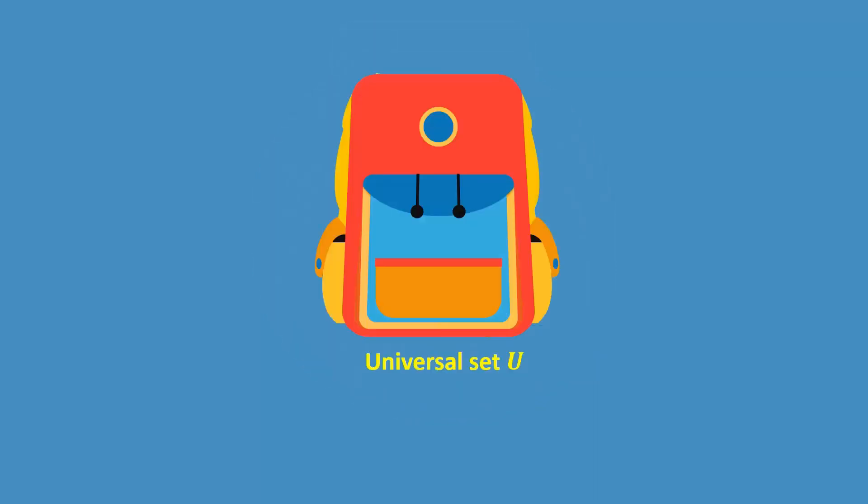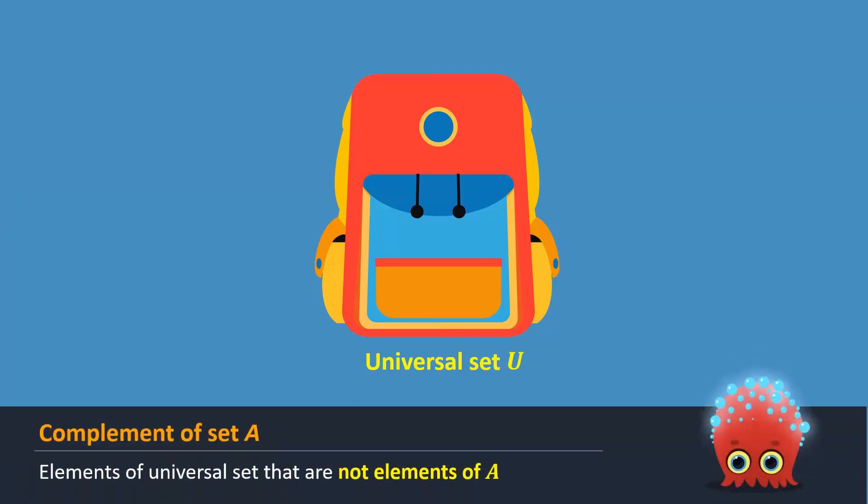Suppose that on Mondays, there is no Urdu period in Aiza's class, so she takes out the Urdu books from her school bag and only keeps the rest. In other words, books belonging to set A are removed from the universal set. This process is called taking the complement of a set.